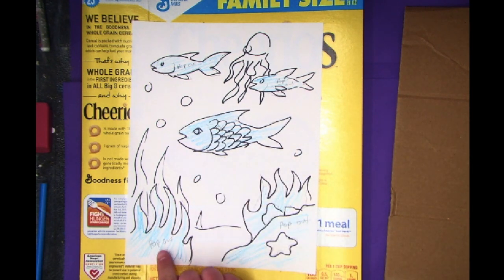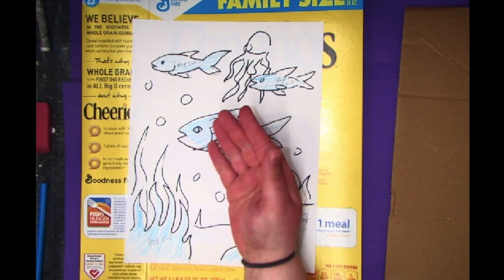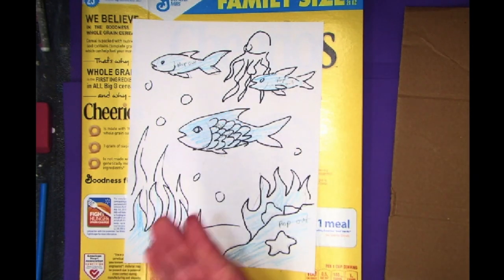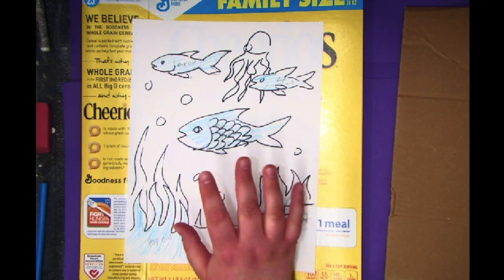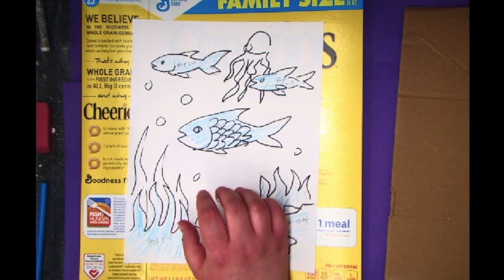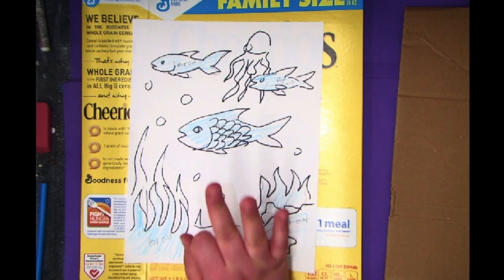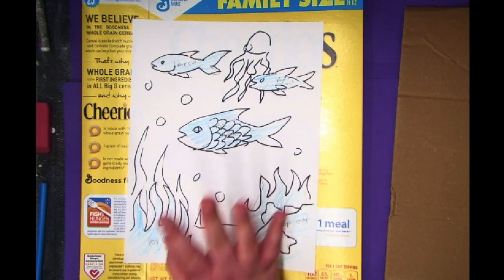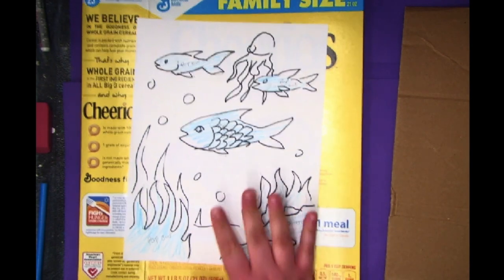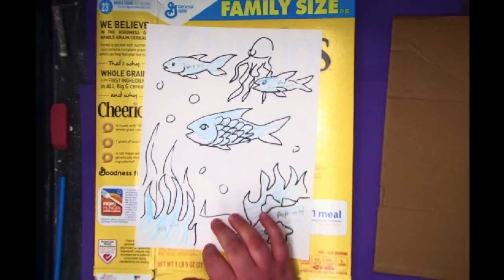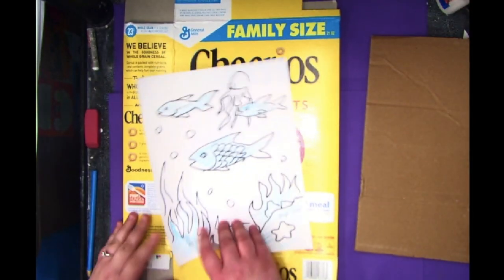I marked in blue where I wanted my relief to pop out from the background. For your project, I would like to have at least three things, at least three things pop out from your background. After you have your plan, the next step is to take either your cracker or your cereal box.